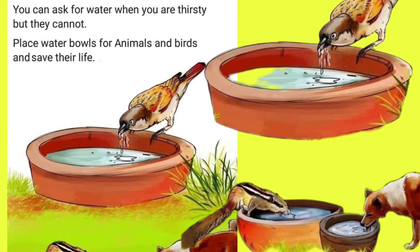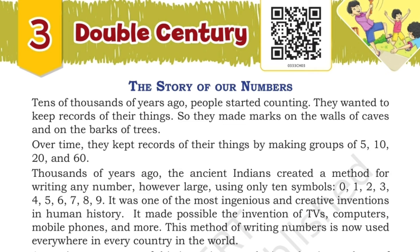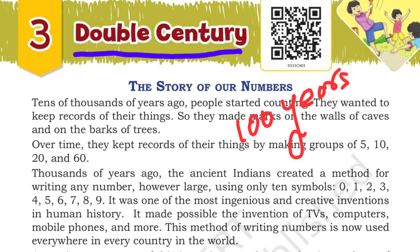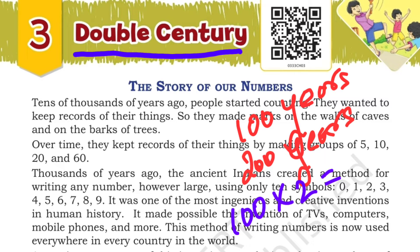Now let's go into the lesson. The lesson name is Double Century. Century means 100 years. Double century is 200 years, which is 100 into 2 — 200. Double is 2, so 2 into 100 is 200 years.